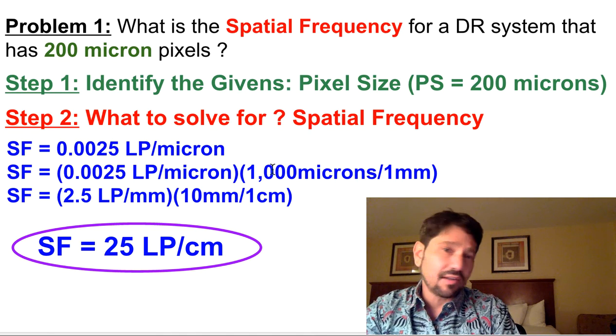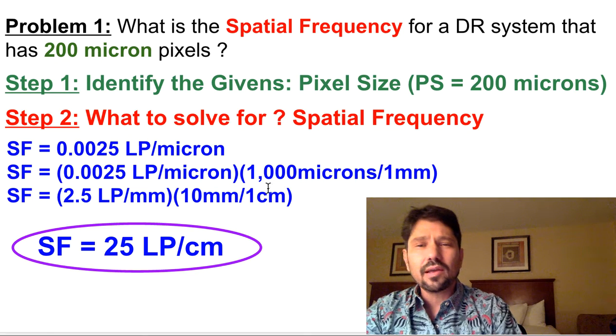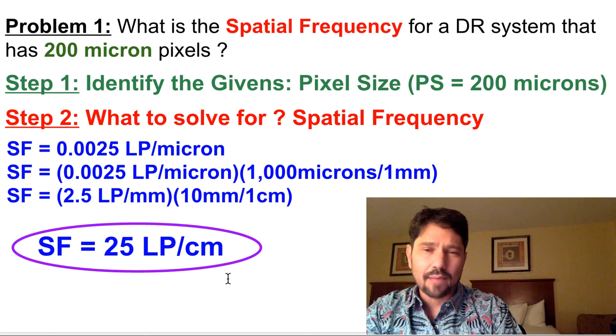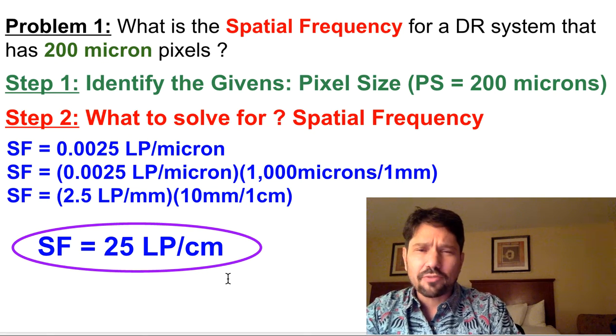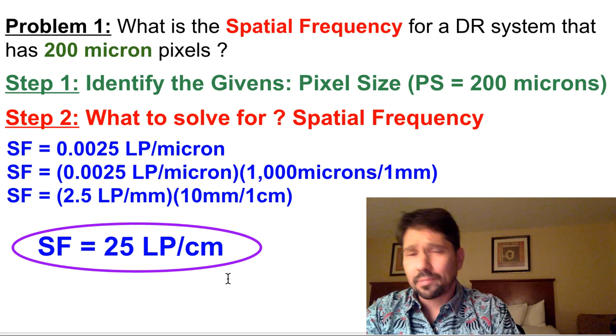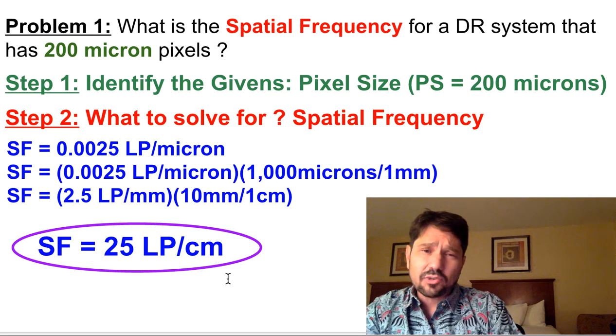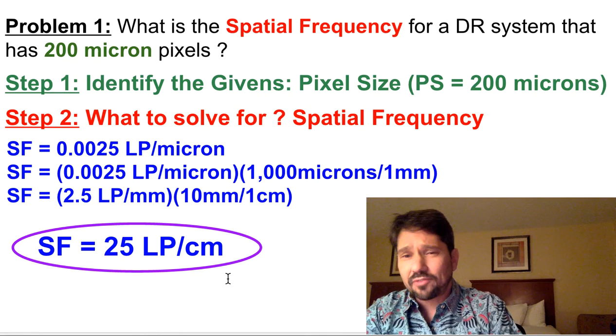Or back here, you could have done 10,000 microns per centimeter and kind of combined it all in one step. But it's pretty straightforward to go from line pairs per millimeter to line pairs per centimeter. If you've got 2.5 in a millimeter, you can get 25 in a centimeter.